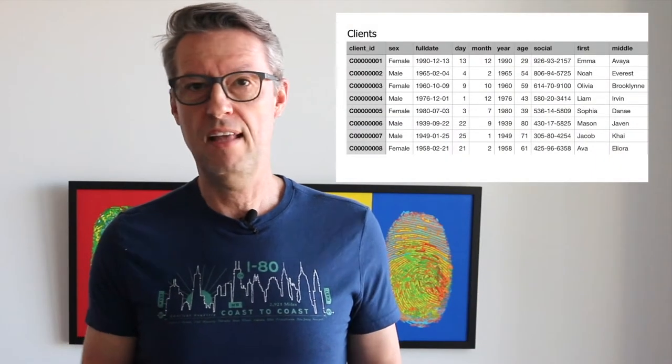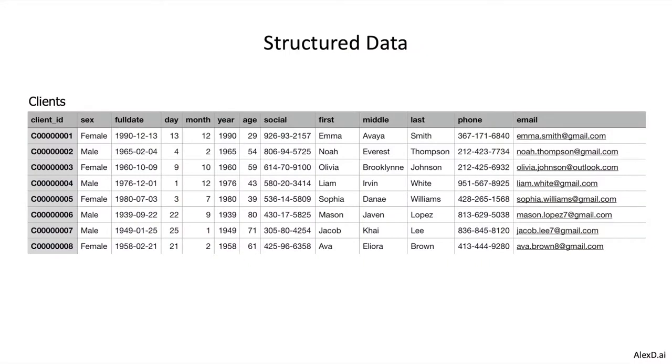For example, the first column here: sex — we can have two different values, female and male. And also age. For a client in a bank, the age value should be between maybe 18 or 20 to close to 100. All numbers outside this range we would probably recognize as not valid. You know exactly what the data below all these columns should be — email must be a correct email, phone number — you know usually how many numbers make up a phone number, and things like that.